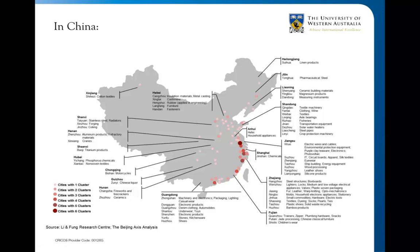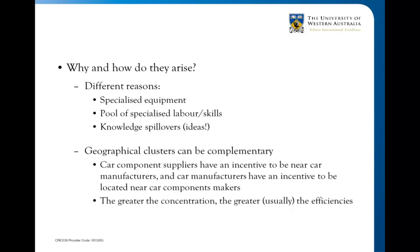Sometimes we also get related industries clustering together. An example is car components: you have car producers making the car itself, but a car requires numerous bits and pieces — both for the original vehicle and for spare parts later. Car component suppliers have an incentive to be near the car manufacturers, and the car manufacturers have an incentive to be near the component makers. So they all tend to physically cluster together. The greater the concentration, usually, the greater the efficiencies.